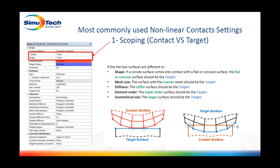Here are the general guidelines. The first rule: if you have a convex surface coming in contact with a flat or concave surface, then the flat or concave surface should be the target. The second rule: if there is a difference in mesh coarseness between the two contacting bodies, the coarser mesh should be on the target body. The third rule: if there is a difference in stiffness, the stiffer part should be the target.